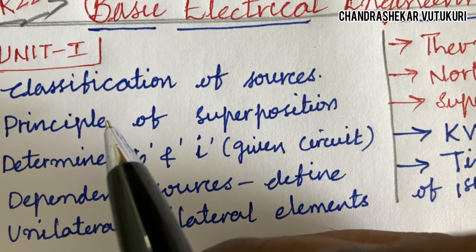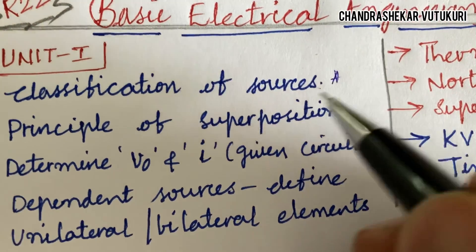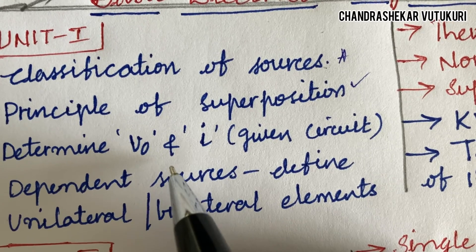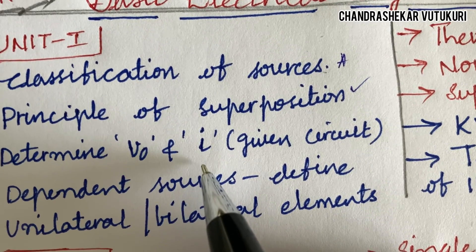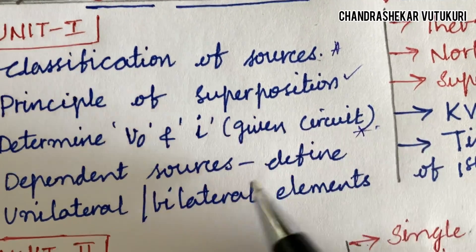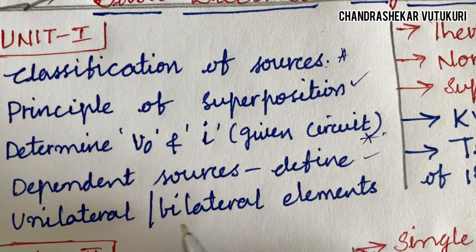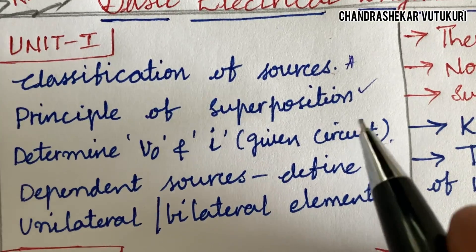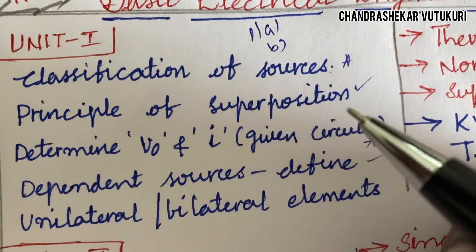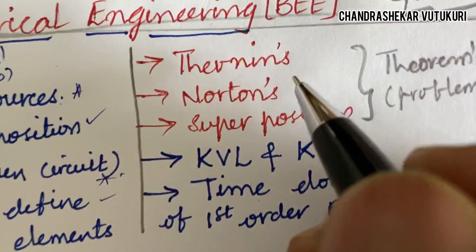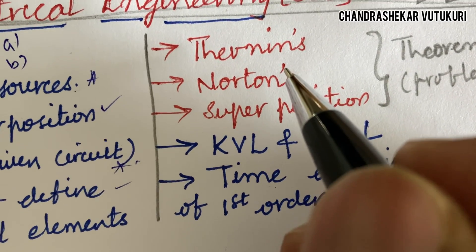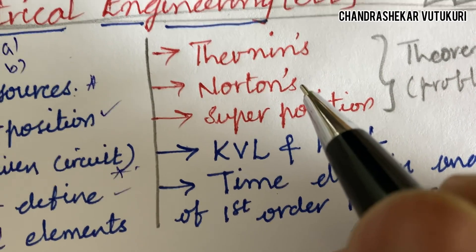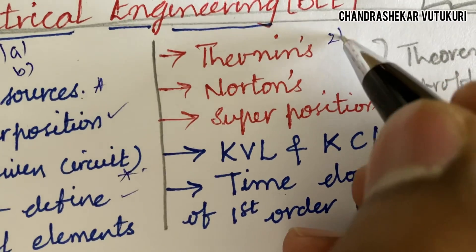The first and foremost short question is the classification of sources and the principle of superposition, which may also be a short question. Determining the voltage and current for a given circuit diagram, dependent sources, and defining unilateral and bilateral elements along with their differences — these all may be part of the Part A short questions for both 1A and 1B DS students. Part A consists of short questions from A to J, and the long questions are from 2 to 6. I am going to highlight a few long questions for the course BEE, i.e., 2AB.